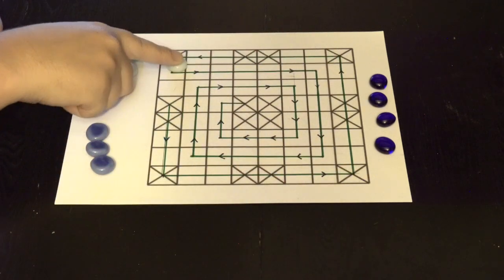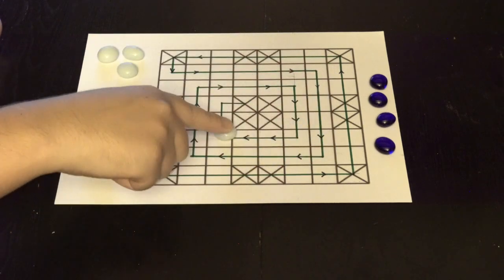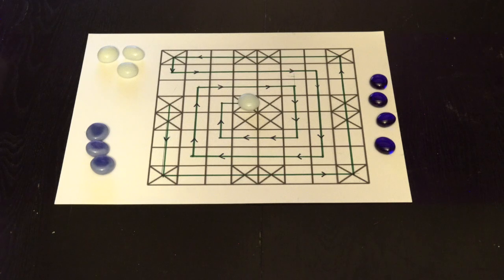Each bead or each piece follows the path drawn here in green, going from the center, counterclockwise, clockwise, then all the way back.